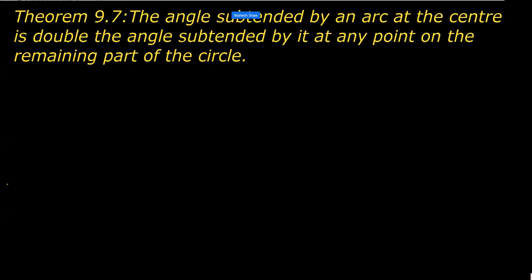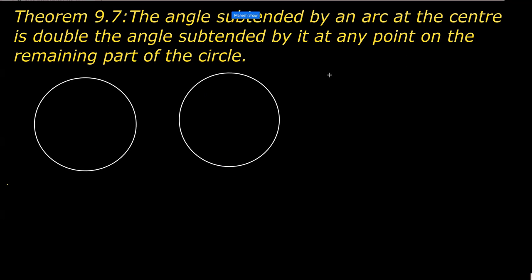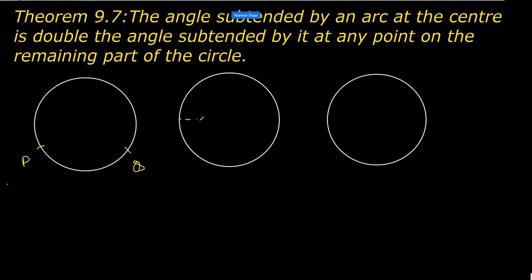For that, you have to draw three circles. In the first case, I'm taking PQ as a minor arc. In the second case, I'm taking PQ as the semicircle. And in the third case, I'm going to take PQ as the major arc.